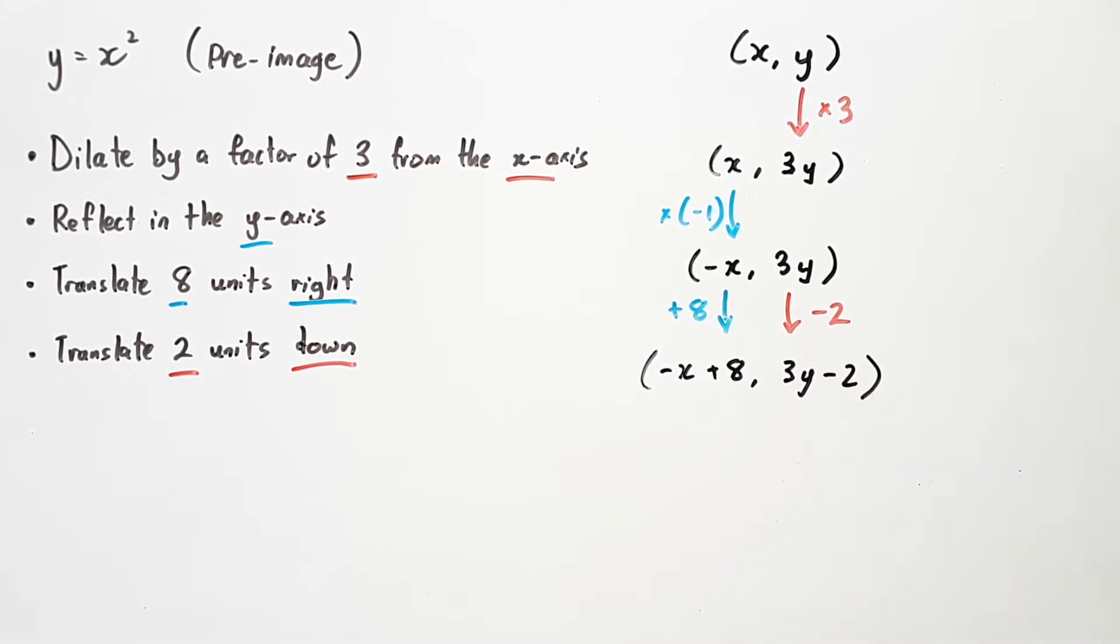So you'll notice in this case that we didn't just take the x and add 8, or take the y and minus 2, but we took the entire component -x, or 3y, and operated on it. So with every operation, you want to make use of the last iteration that you found.